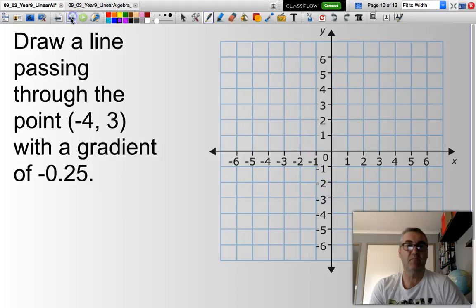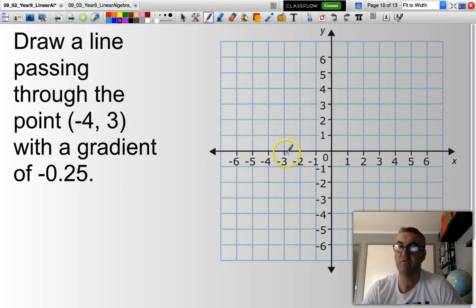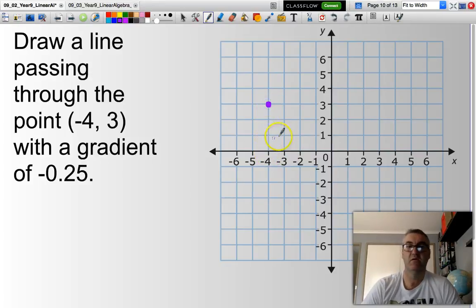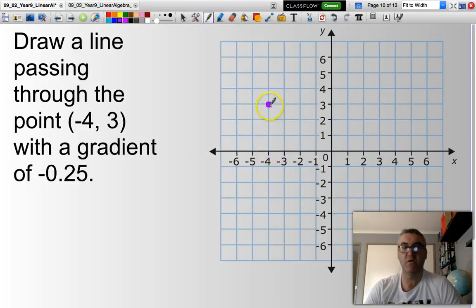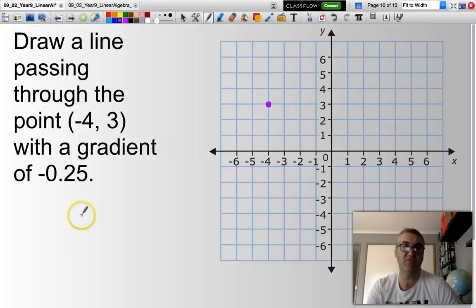Let's look at the next one. Yes, and I think this is the last one. Draw a line passing through the point negative 4, 3. So let's find x equals negative 4, y equals 3. That is there. Negative 4 for x, y is 3. Now, a gradient of negative 0.25. Now, 0.25 is represented as a quarter. Now, m will be equal to minus 1 over 4. Negative to represent that.